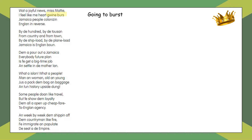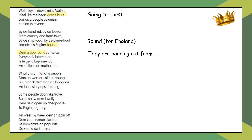We then have this idea of Jamaican people colonising England in reverse — the movement of people from Jamaica to England. In the next stanza, people are coming to England by the hundreds, by the thousands, from the country and from towns, by ships and by plane — there's a lot of enthusiasm for coming to England. People are pouring out of Jamaica, and everybody's future plan is to get a big time job and settle in the motherland — a really interesting phrase I'll talk about more later.